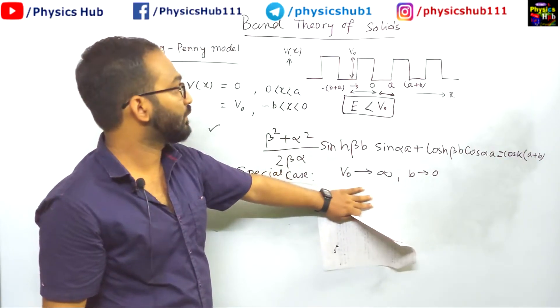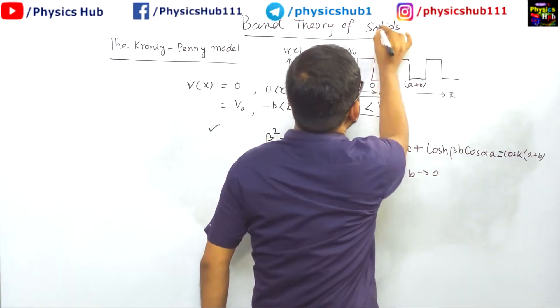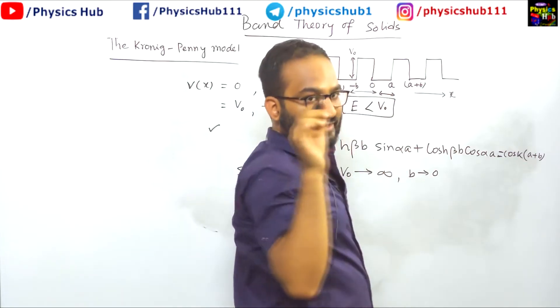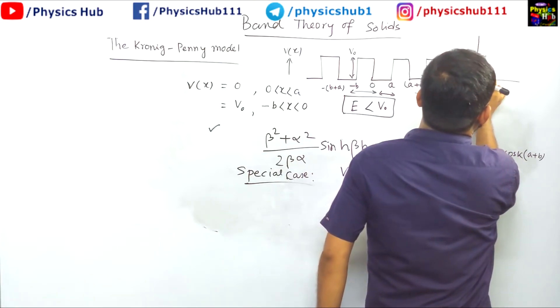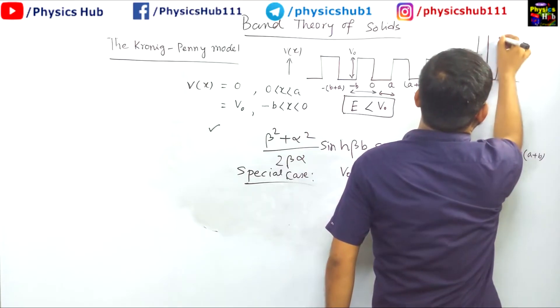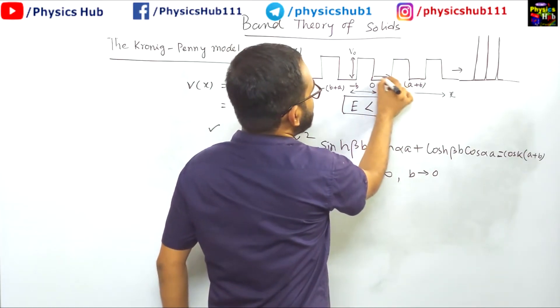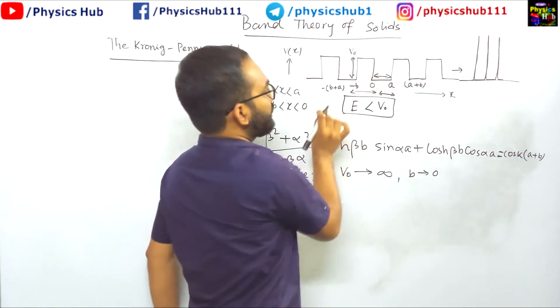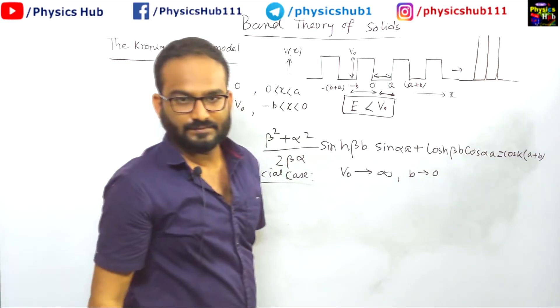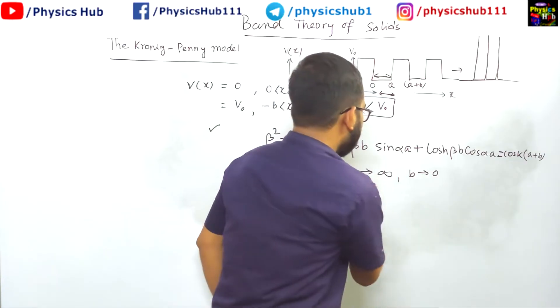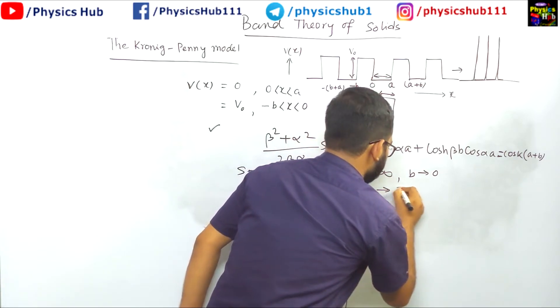So if you implement this special case, what kind of potential it would become? So V₀ is high, this width b is very small, so it will take up the form of kind of Dirac delta function. You can say the potential will be like this: sharp peak spaced by some width. This 0 to a is not changing, only this width b is changing, so it will become some kind of infinite peaks.